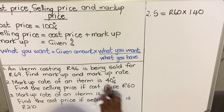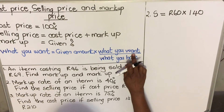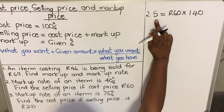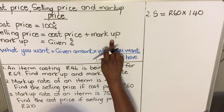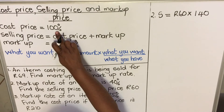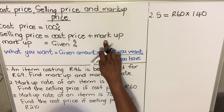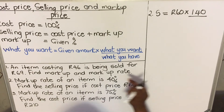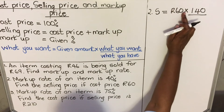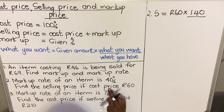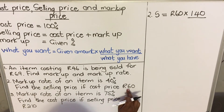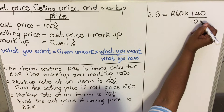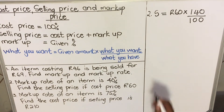Looking at our formula: the given amount is 60 rands, what we want is the selling price at 140 percent, and what we have is the cost price, which is always 100 percent. So we divide by 100. Punching it into the calculator, our selling price equals 84 rands.